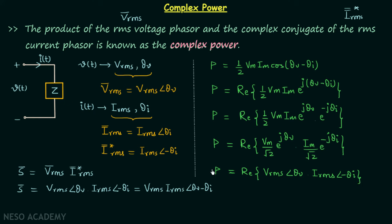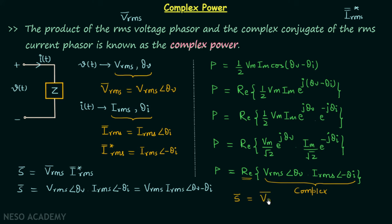The average power equals the real part of V_RMS ∠ θ_V × I_RMS ∠ −θ_I. Since we are computing the real part of a complex value, this complex value itself is our complex power. We can see that V_RMS ∠ θ_V is the RMS voltage phasor, and I_RMS ∠ −θ_I is the conjugate of the RMS current phasor, confirming our derivation of complex power.